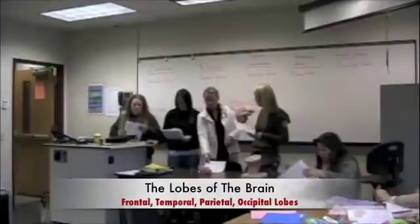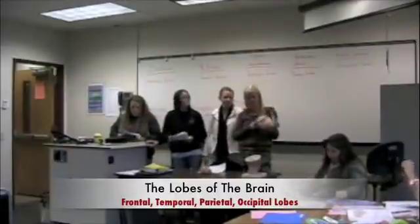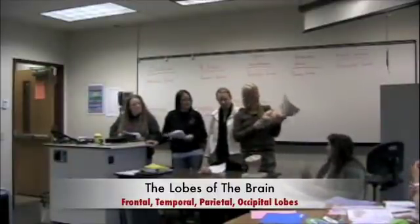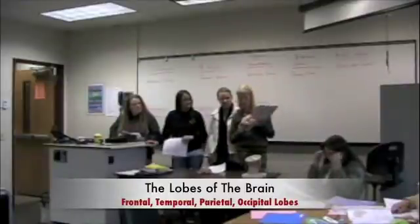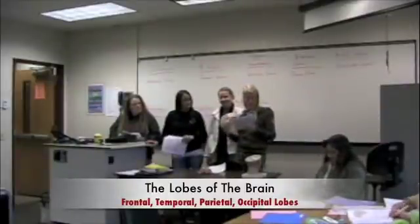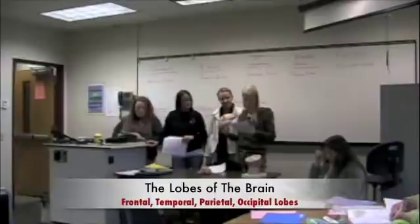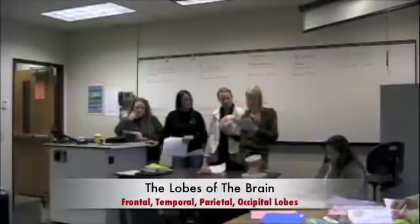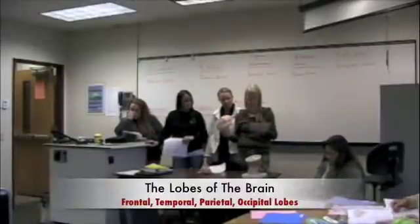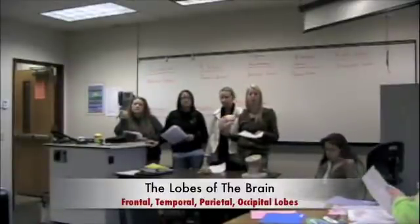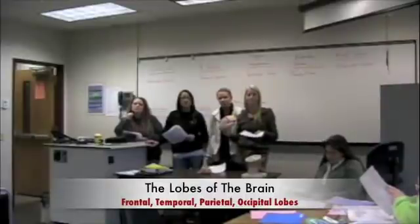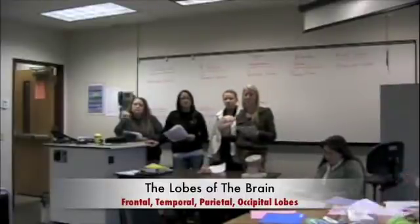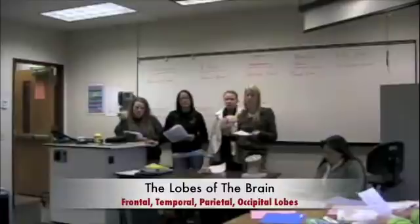The temporal lobe is found on the side of the brain down here, and it looks like noodles as well. It receives impulses from receptors in the nasal cavities for the sense of smell, and the auditory areas receive impulses from the ear for hearing. It's right above your ear, same place as the temporal bone — one on each side.